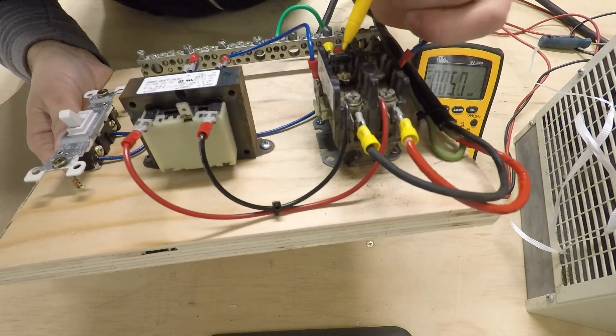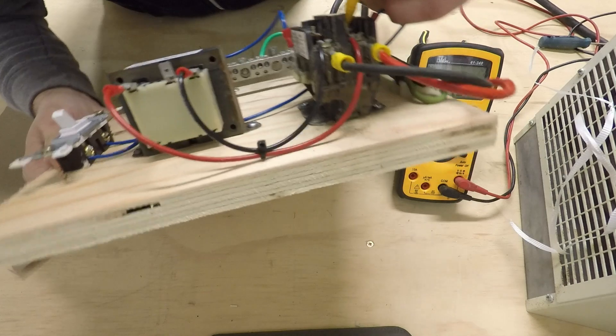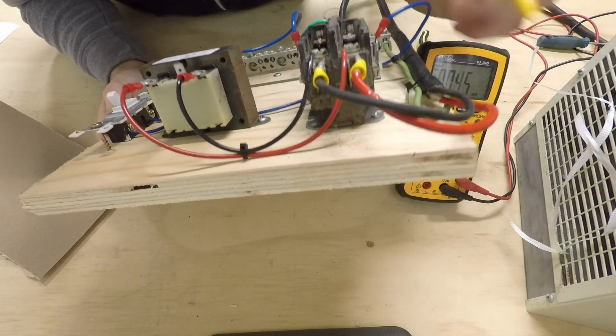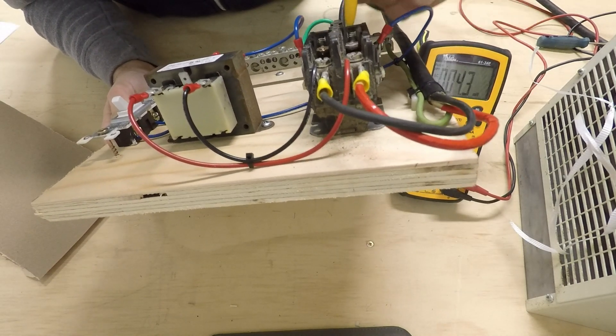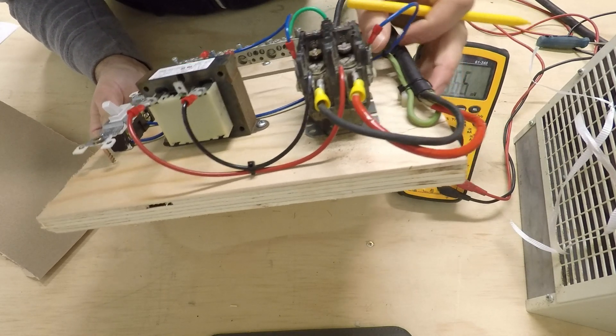So right about in here is where the spring is. Hopefully you can see that. It might be a little bit dark, but anyways, that spring is what keeps tension when this contactor goes in and out to close the contacts.